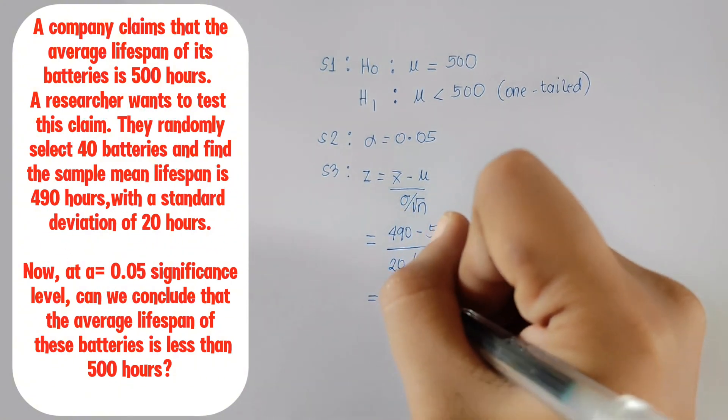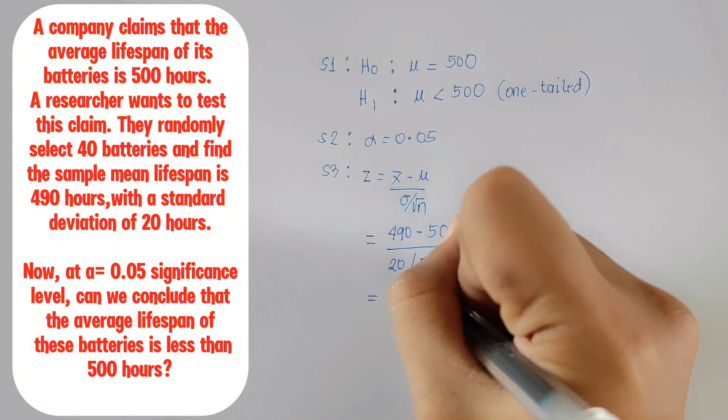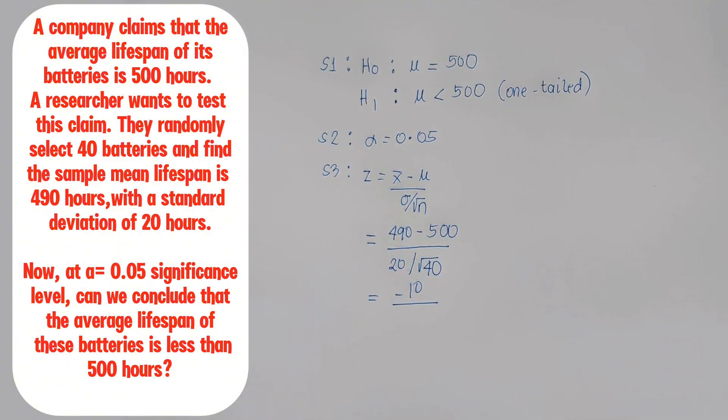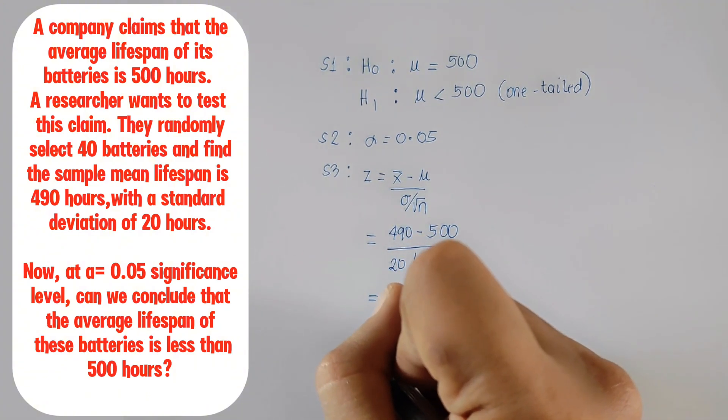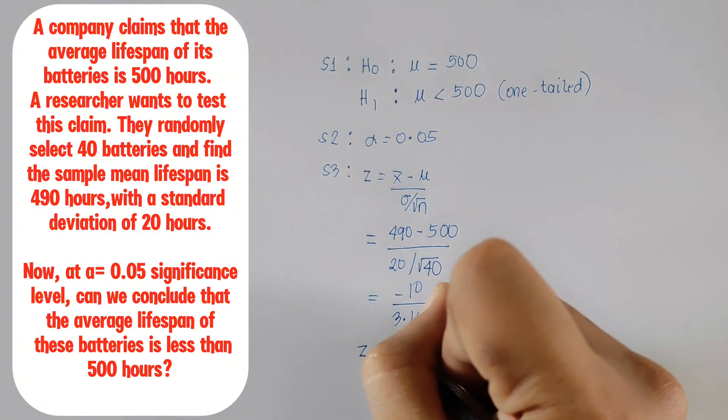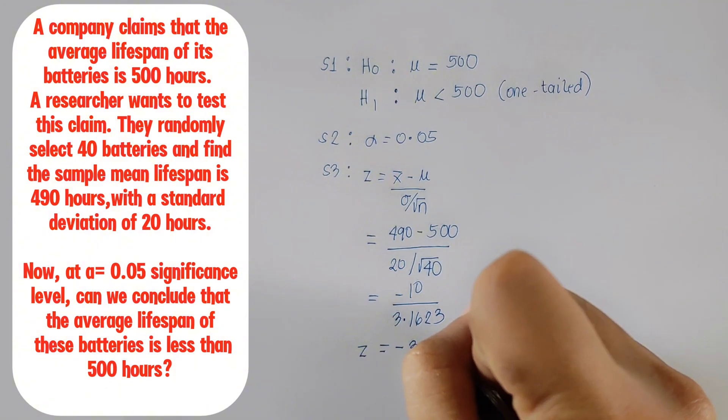Now, let's solve. 490 minus 500 is negative 10. 20 divided by square root of 40 is 3.1623. Negative 10 divided by 3.1623 is approximately negative 3.16.